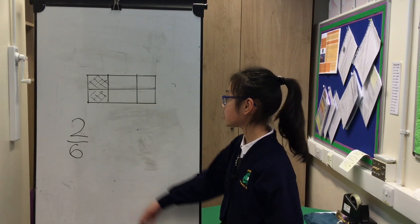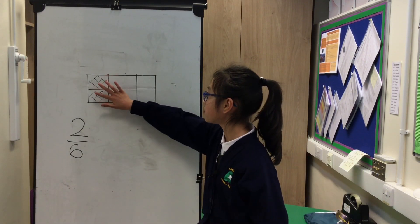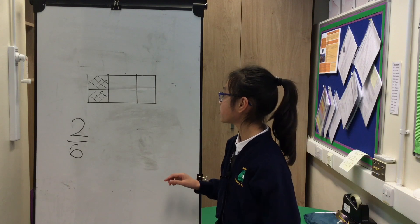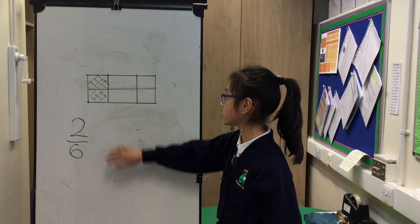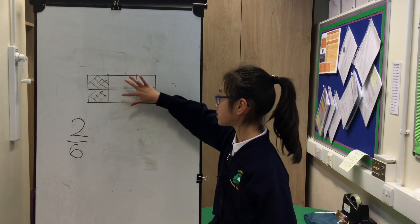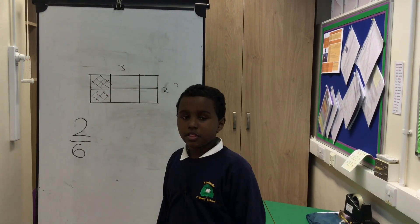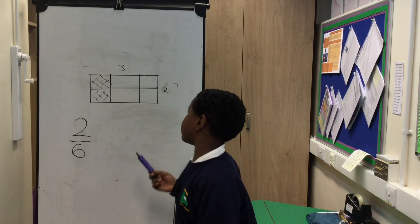You can see 1/3 and you can also see 2/6. This is how the maths works.